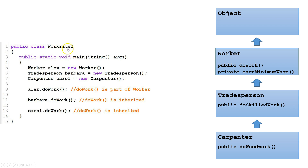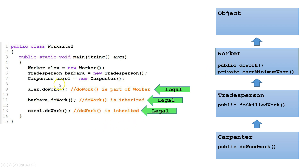Let's look at Worksite2. We have Worker Alex initialized with a new Worker, Tradesperson Barbara initialized with a new Tradesperson, and Carpenter Carroll initialized with a new Carpenter. Calling DoWork from Alex is legal because DoWork is a method inside the Worker class and Alex points to an instance of it. It is also legal for Barbara to call DoWork, because DoWork is inherited from the Worker class — Tradesperson is a Worker and inherits all public methods. Carroll calling DoWork is also legal, because Carroll inherits DoWork from Tradesperson, which inherited it from Worker.